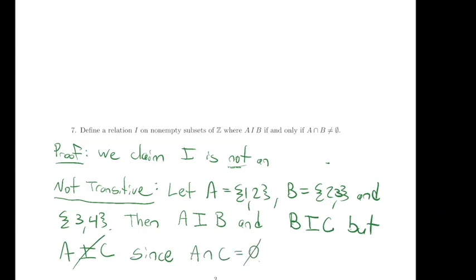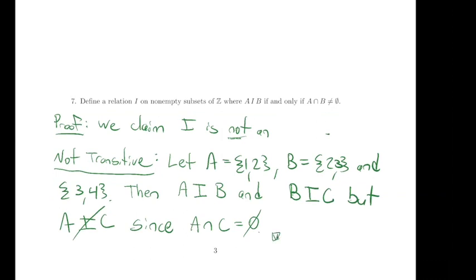That counterexample works — when disproving something we can be very specific and use a concrete counterexample. For problem 7, the other properties: it is reflexive and it is symmetric, but it's just not transitive, so it fails to be an equivalence relation.